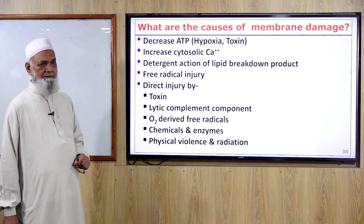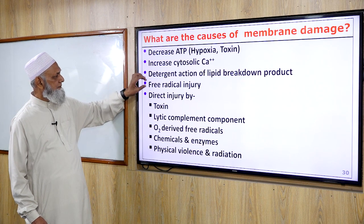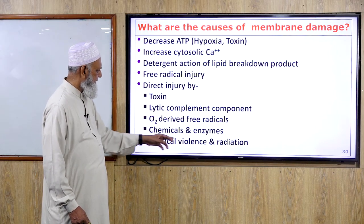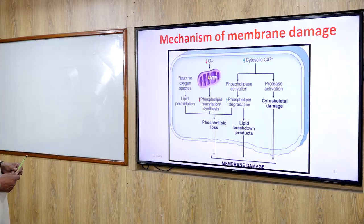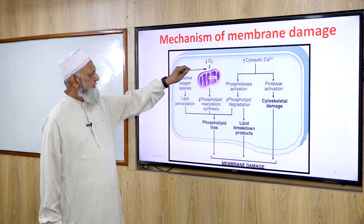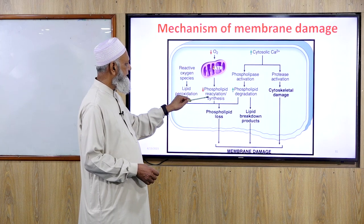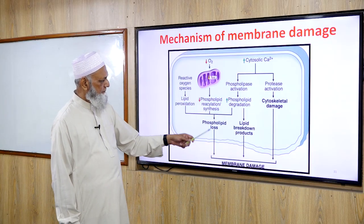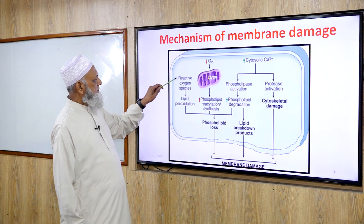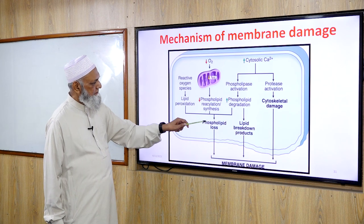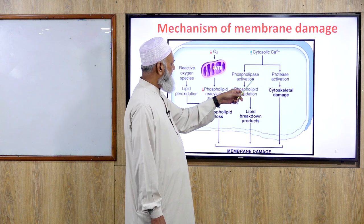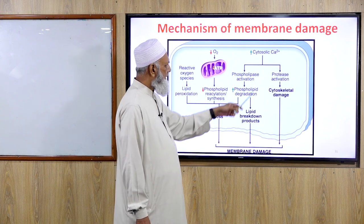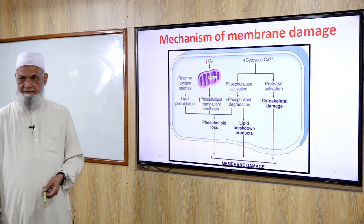Causes of membrane damage include decreased ATP, increased cytosolic calcium, detergent reaction, free radicals, direct injury by toxins, lytic complement components, oxidative free radicals, chemicals and enzymes, and physical violence and radiation. Mechanism: decreased oxygen causes decreased ATP, which causes decreased phospholipid reacylation and synthesis, then phospholipid loss and membrane damage. Reactive oxygen species cause lipid breakdown, phospholipid loss, and membrane damage. Cytosolic calcium causes phospholipase activation, increased phospholipid degradation, lipid breakdown products causing membrane damage. Protease activation causes cytoskeletal damage and protein damage of the cell membrane.